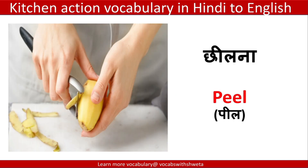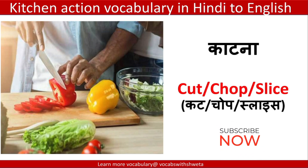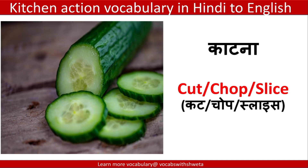छीलना — to peel — in English we call it 'peel.' काटना — to cut — in English is said in three ways: 'cut,' when we cut vegetables in a general way; 'chop,' when we cut vegetables into pieces; and 'slice.'